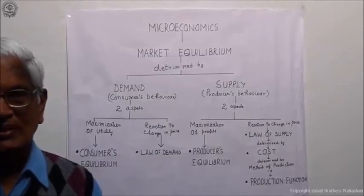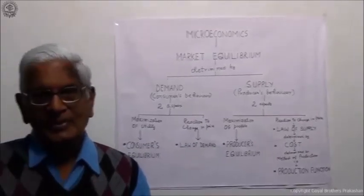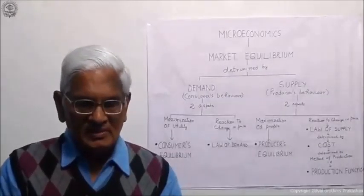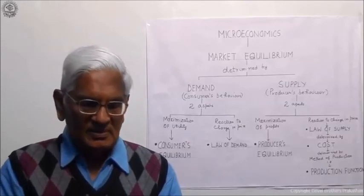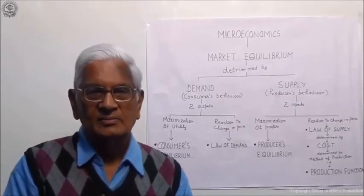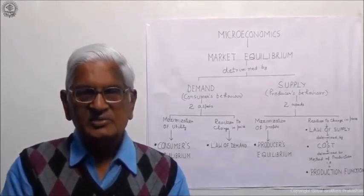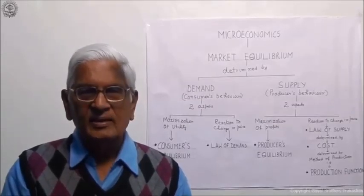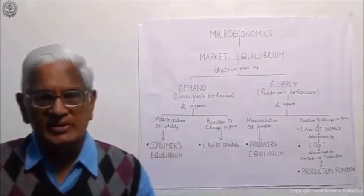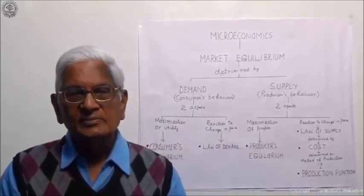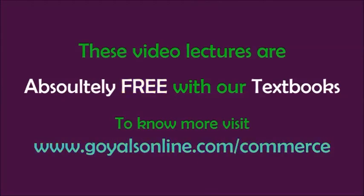The second aspect of consumer behavior: the consumer goes to the market to make purchases. You are a consumer — suppose you go to the market and want to buy something. You have a price in mind; let's say this commodity should be available to you at rupees 100. It's not that you simply want to pay 100 — you are ready to spend 100 and you expect it to be available at that price. Then you go to the market.